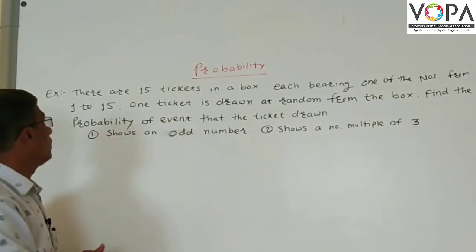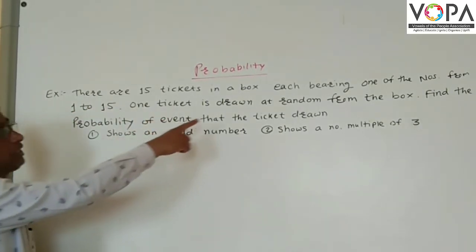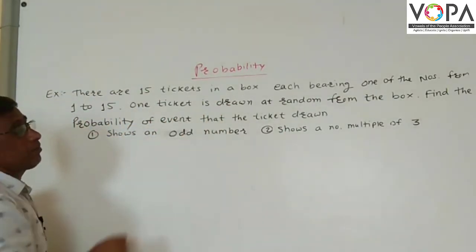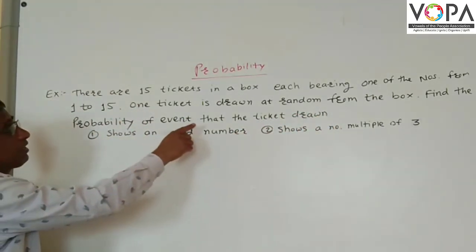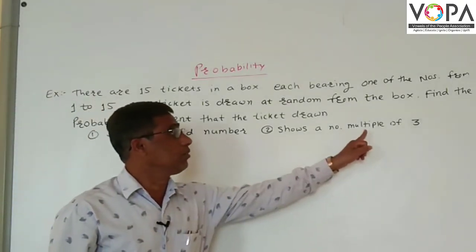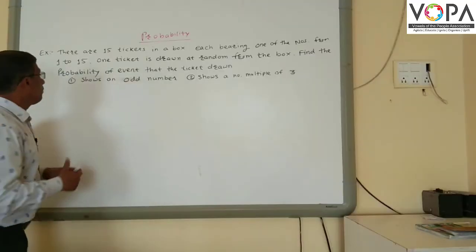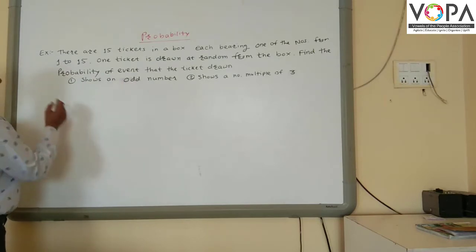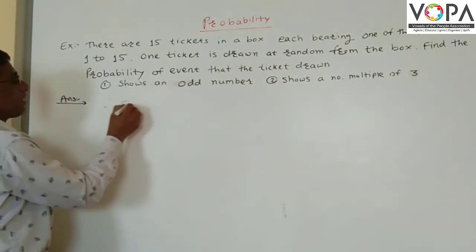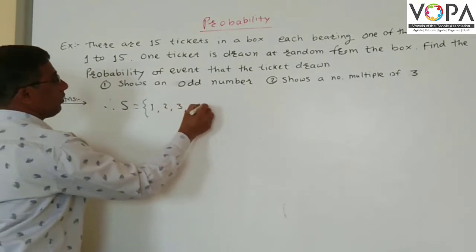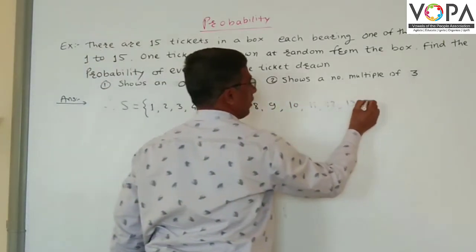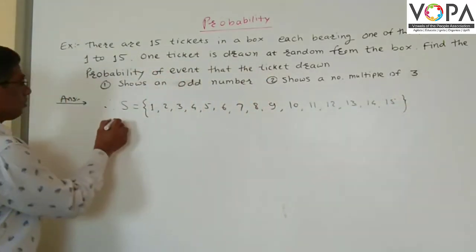Examples on probability. First, there are 15 tickets in a box, each bearing one of the numbers from 1 to 15. One ticket is drawn at random from the box. Find the probability that the ticket drawn shows an odd number. Second, shows a number which is a multiple of three. Now, first we shall find the odd number. There are 15 tickets in a box, each bearing one of the numbers from 1 to 15. Therefore, sample space S is equal to {1, 2, 3, 4, 5, 6, 7, 8, 9, 10, ...}. Therefore, N of S is equal to 15.